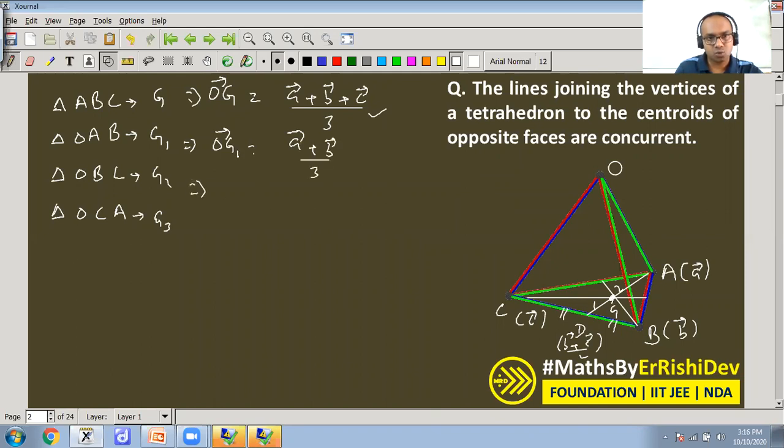Similarly, this is OG1. Then when I move to OG2, the third triangle OBC. What will I have to do? b plus c by 3. That is b plus c by 3, because if I add 0, what is the difference? The origin is 0, the position vector of origin is 0.